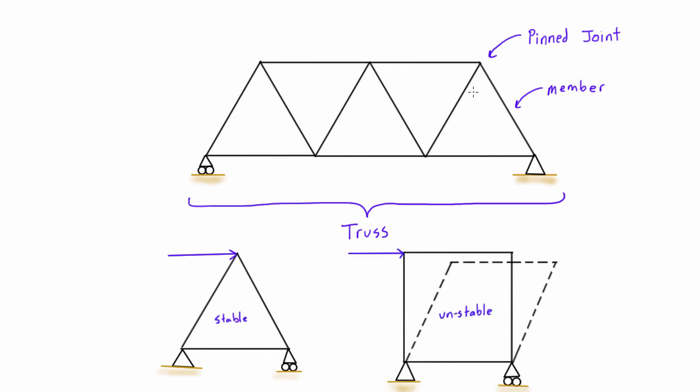In statics, we make two big assumptions about trusses. The first is that all joints are pinned connections, which means they cannot resist moments. The second assumption is that all members of a truss are slender and can't support a lateral load - so a lateral load would be something perpendicular to the axes, not in line with the axes.